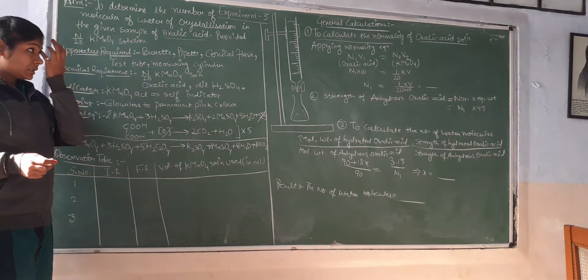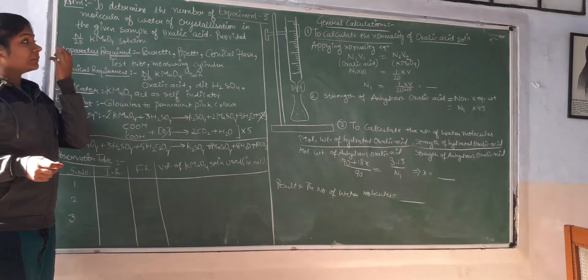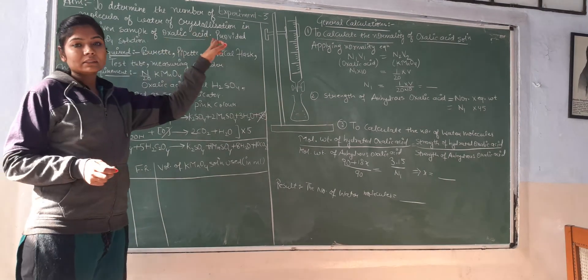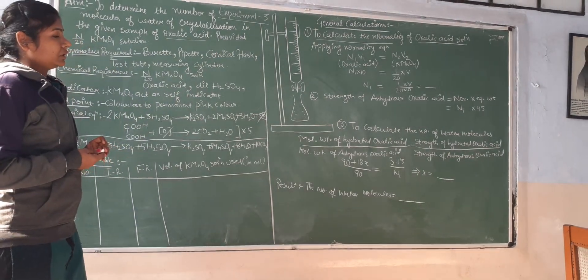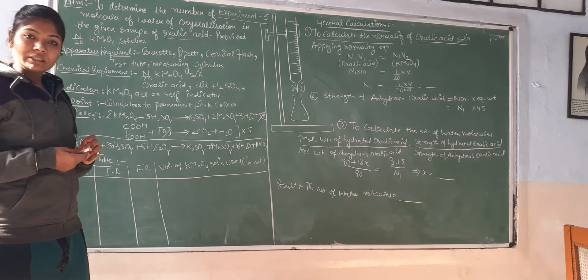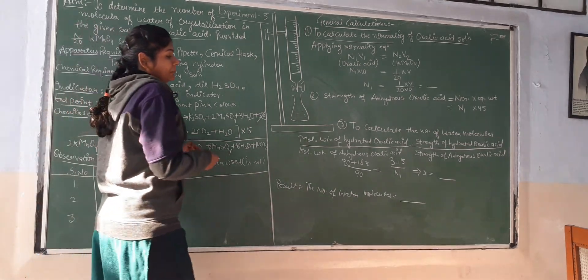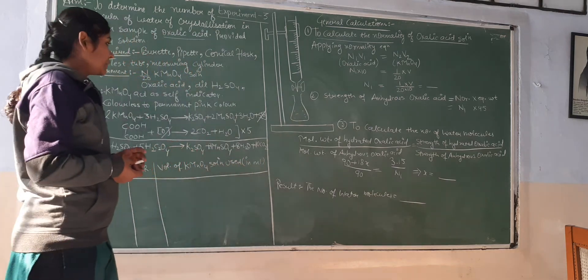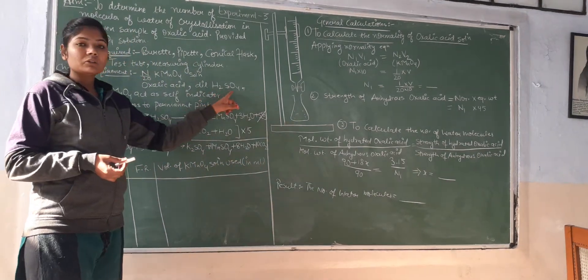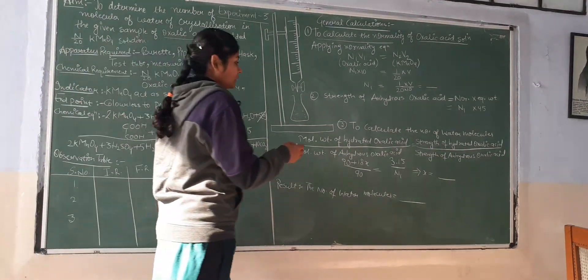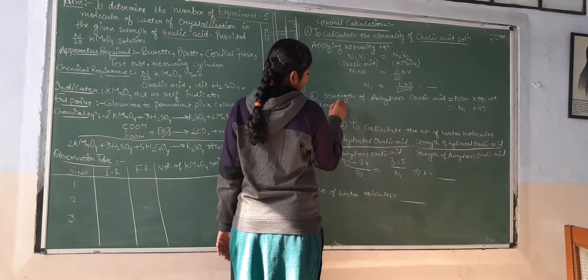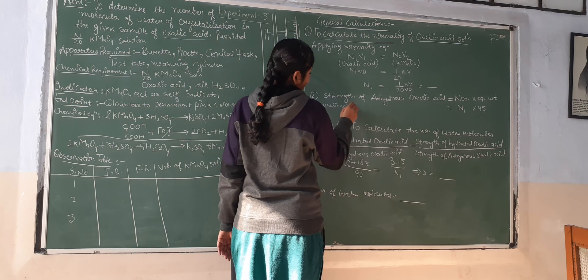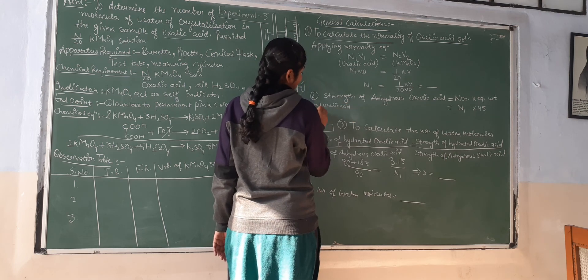Now we will do the practical performance. First of all, to calculate the number of water molecules in oxalic acid, we will take oxalic acid and then add dilute sulfuric acid to the test tube.